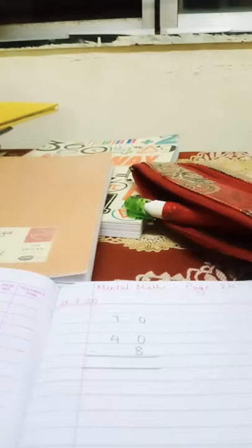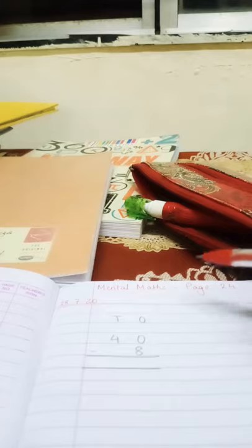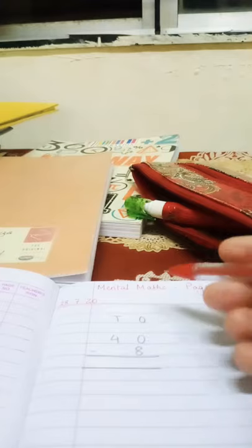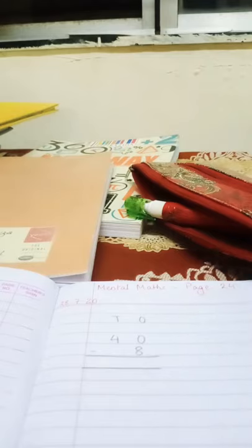Good morning children. Today we shall be doing mental maths page 24 and I will be doing a few sums for you all and the rest you can solve it yourself. As you all know we have done subtraction by borrowing and the first number that is there is 40 minus 8. These numbers are from your mental maths workbook itself.